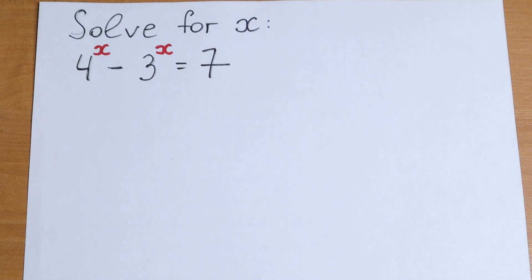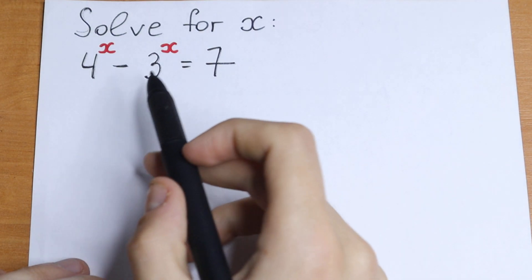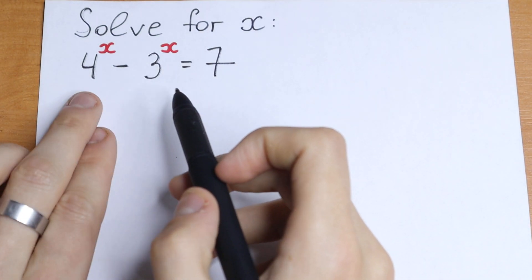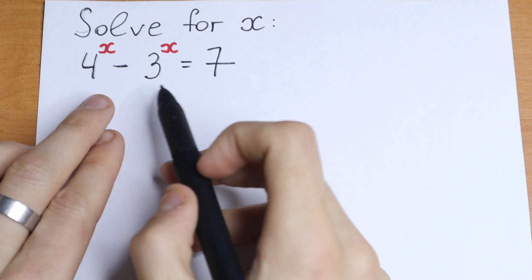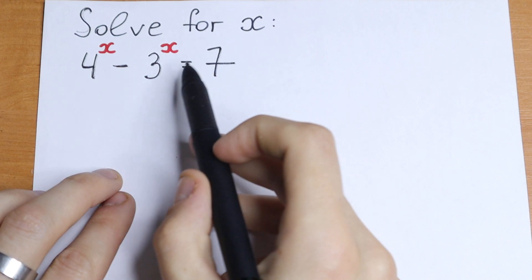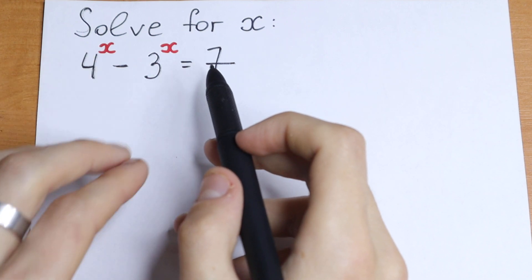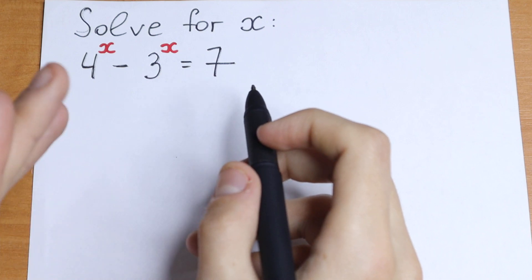Hello everyone! Welcome back to MathMood. Today we have an interesting exponential equation: 4 to the power x minus 3 to the power x equals 7, and we need to find x.